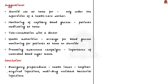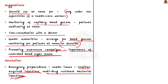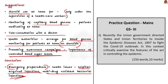The article gives suggestions to overcome these challenges. Steroids used at home for COVID-19 should only be under the supervision of a healthcare worker. Monitoring of capillary blood glucose is essential for patients medicating themselves at home, with teleconsultation with a doctor if high blood sugars are encountered. Health authorities may consider arranging blood glucose monitoring for patients at home on steroids and promoting awareness campaigns on the importance of controlled blood sugar levels. The editorial concludes by highlighting other health issues such as hospital-acquired infections and multi-drug resistant bacterial infections which need emergency care.